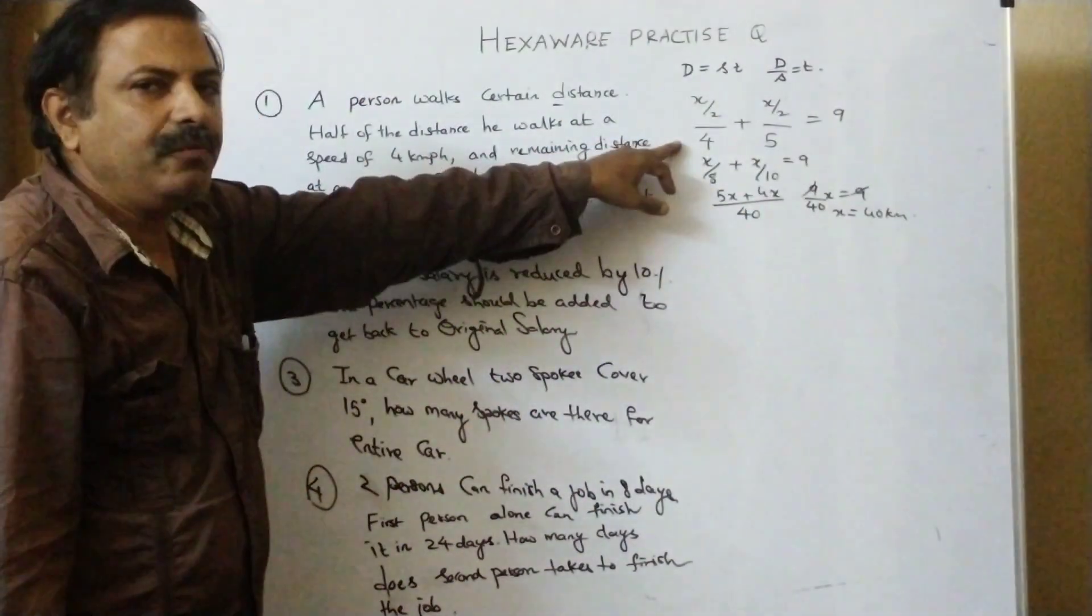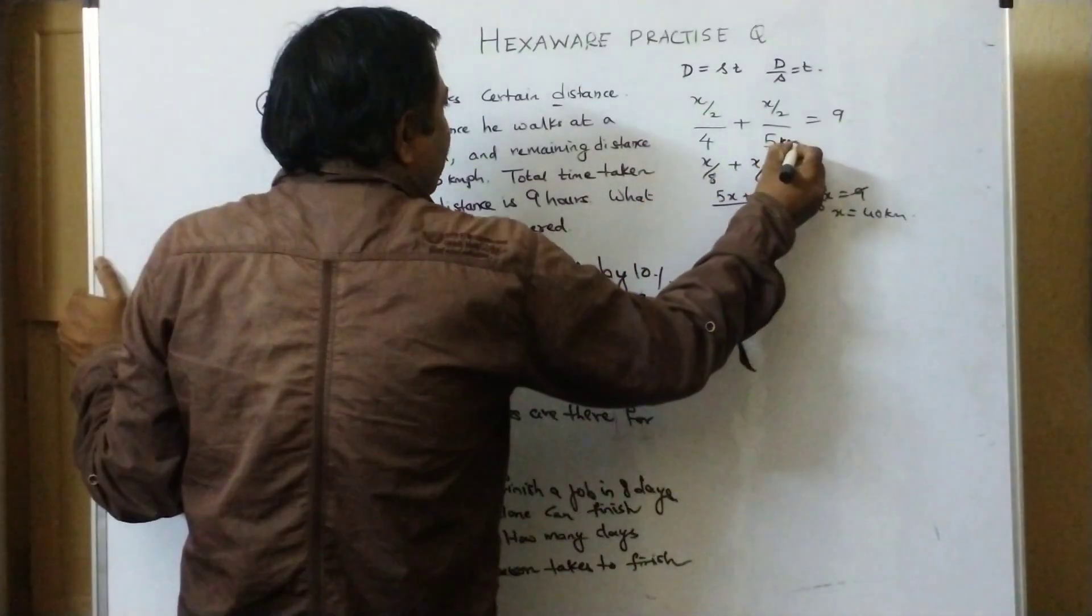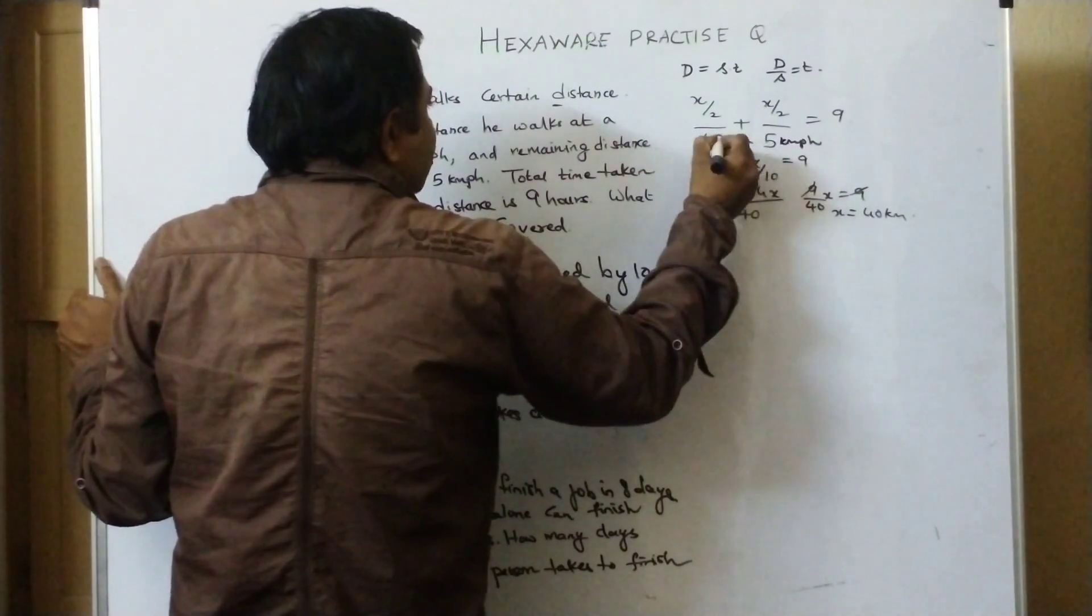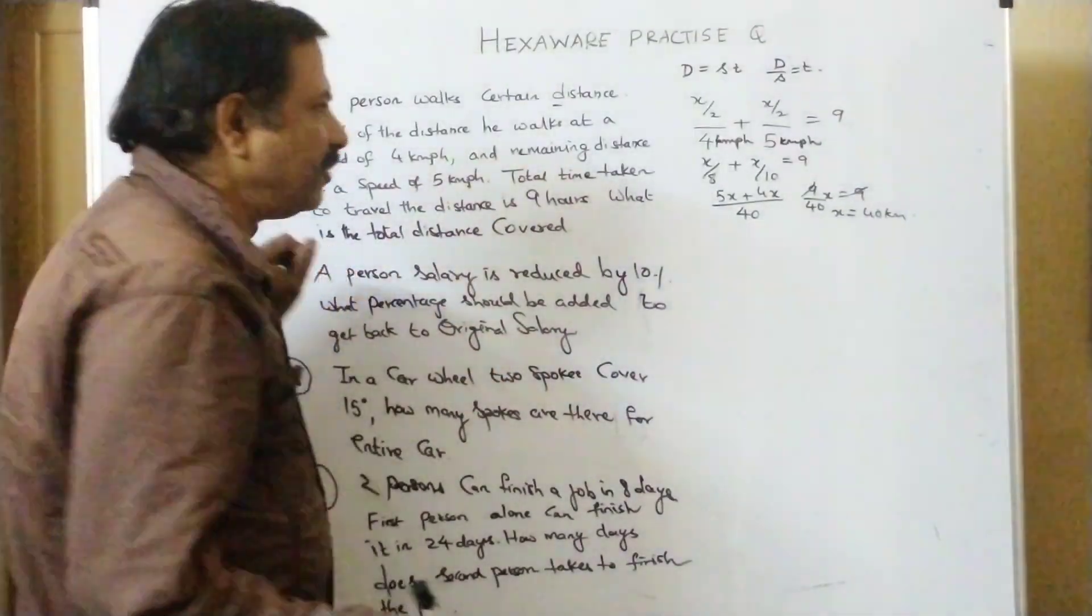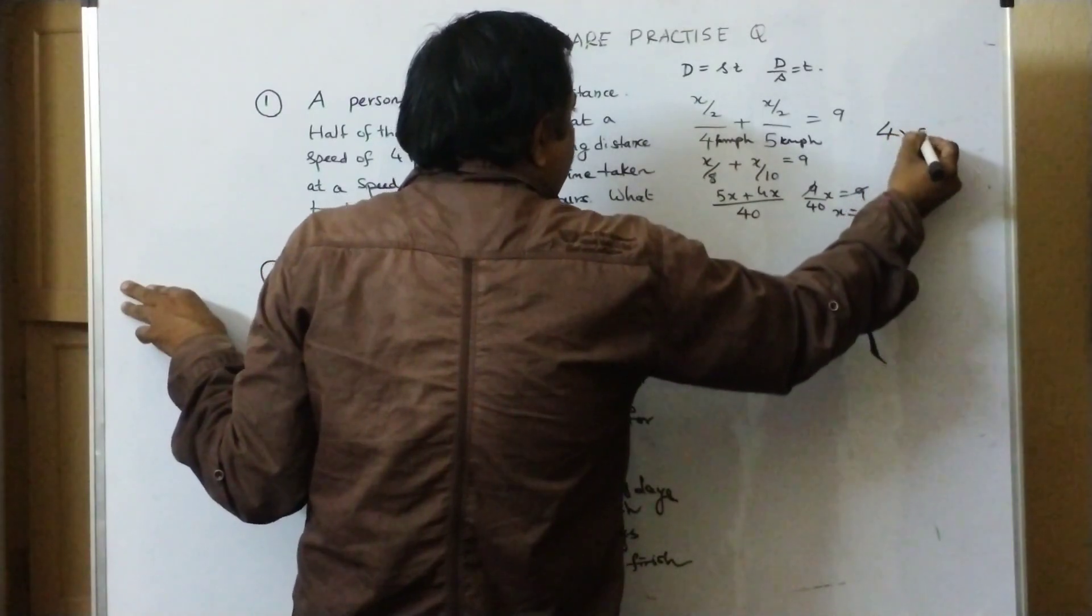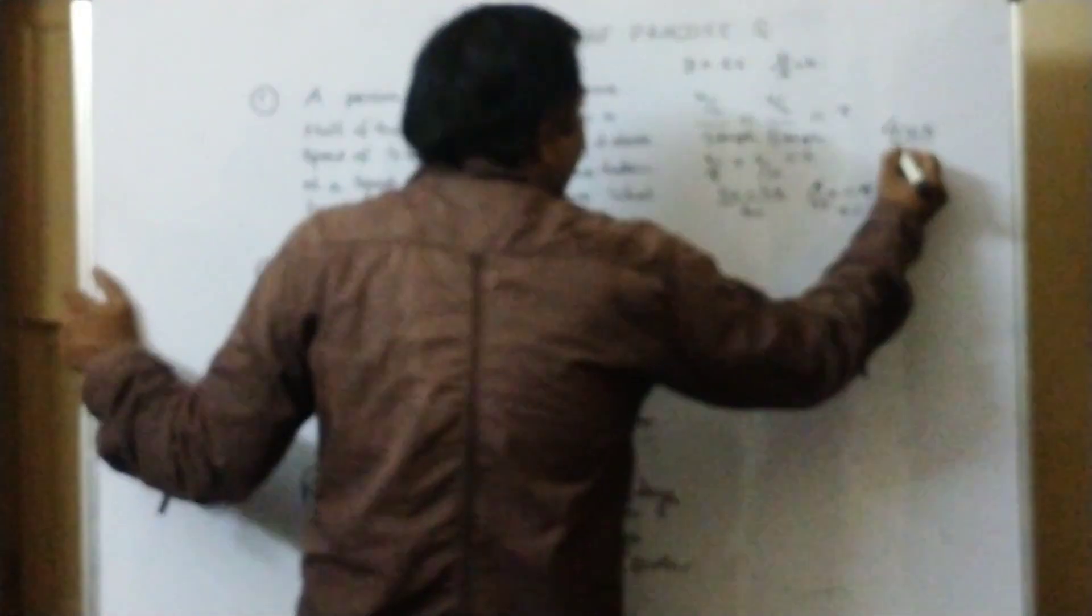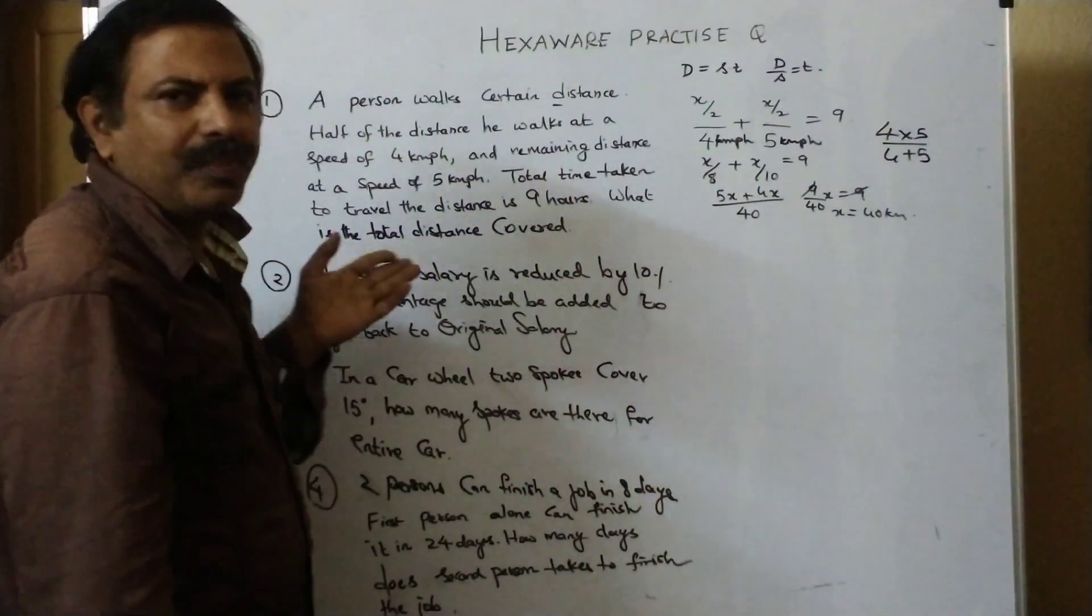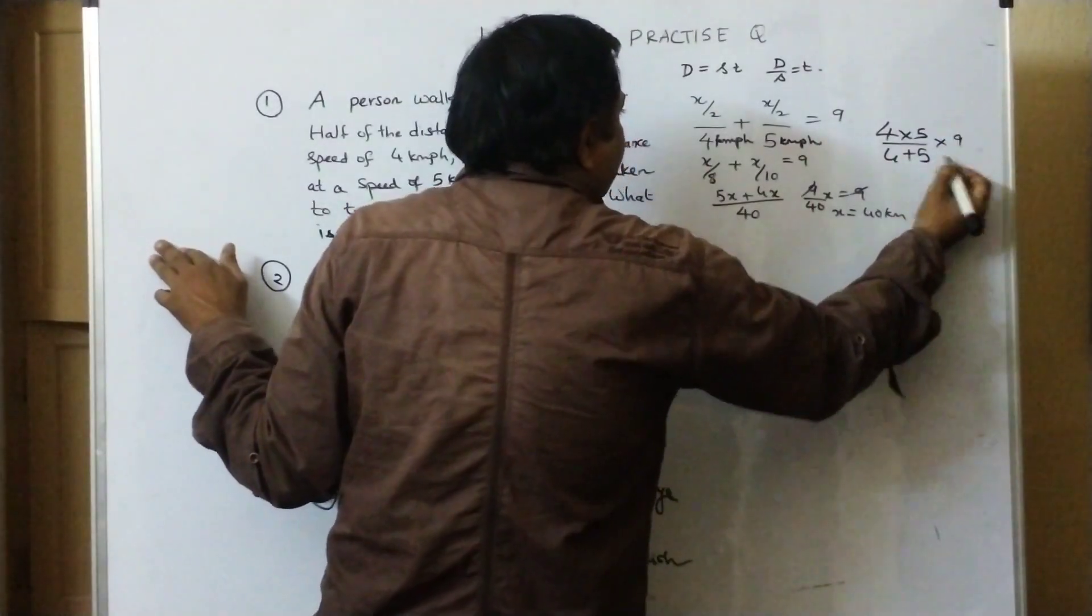Half of the distance, one speed 4 km per hour. And the remaining half at 5 km per hour. This is km per hour. Now there is a trick for this. Then you have to add, product of the speeds, 4 into 5.